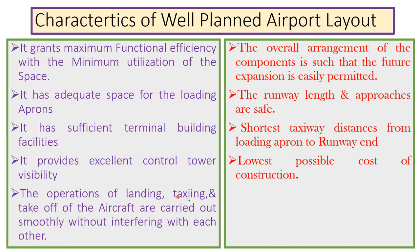The operations of landing, taxiing, and takeoff of the aircraft are carried out smoothly without interfering with each other. The overall arrangement of the components is such that future expansion is easily permitted. The runway length and approaches are safe. There should be the shortest taxiway distance from the loading apron to the runway end. And the last characteristic is the lowest possible cost of construction. These are the few characteristics we need to understand before planning any airport layout.